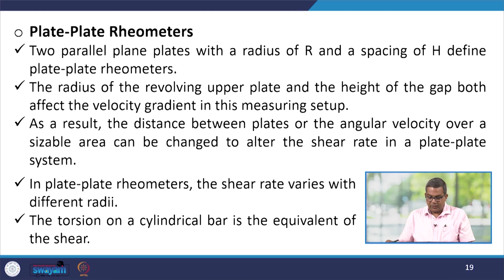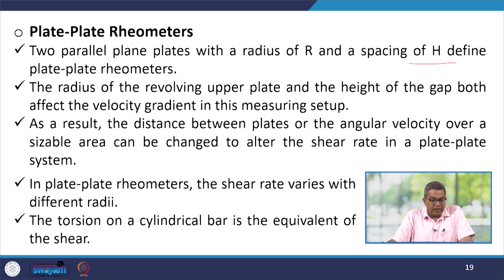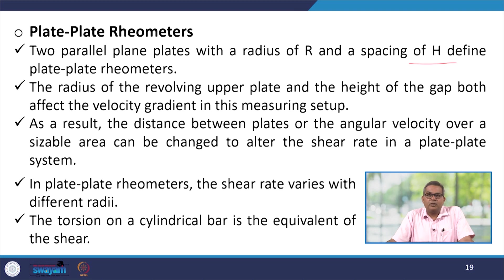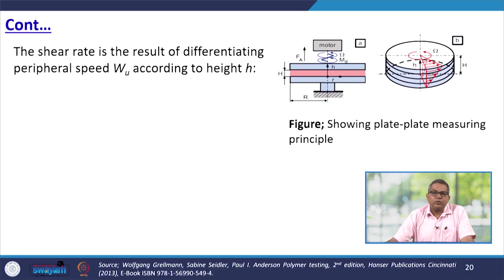The plate-plate rheometer is defined by two parallel plane plates with radius R and spacing H. The velocity gradient is affected by both the radius of the revolving upper plate and the height of the gap. The distance between the plates or the angular velocity over a sizable area can be changed to alter the shear rate. In the plate-plate rheometer, shear rate varies with different radii and the torsion on the cylindrical bar is equivalent to the shear.